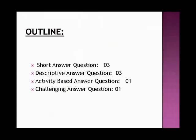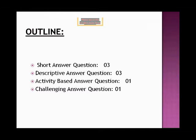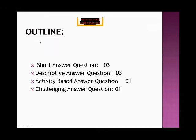Now we are moving towards the next slide which is the outline. From here we start our copy work. For copy work, put your cameras on and take a screenshot of each and every slide I share. In your SSD copy: first write your bio data, then make a title page for chapter one 'Keep Your City Clean,' then make an outline. The outline includes: three short question answers, three descriptive answer questions, one activity-based answer question, and one challenging question.